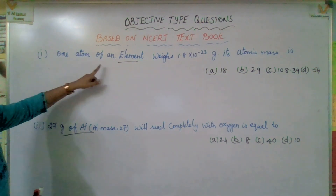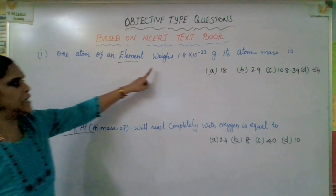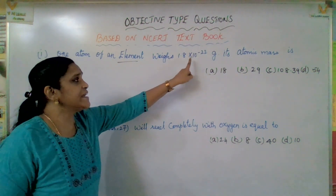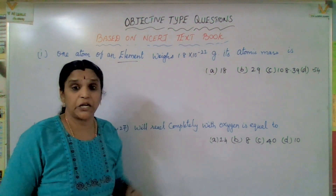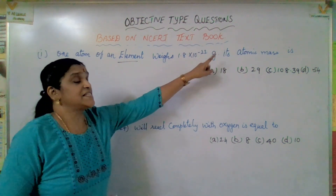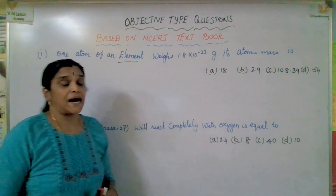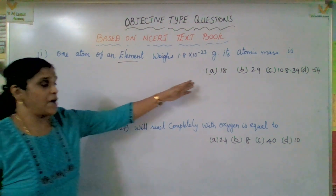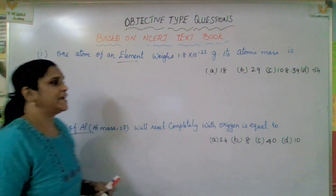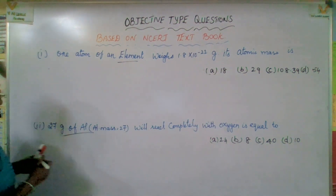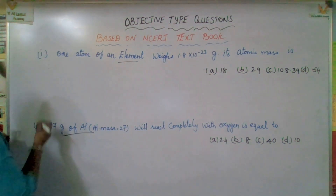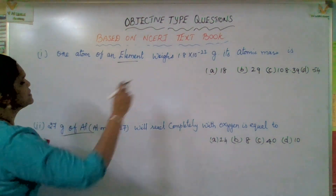One atom of an element weighs 1.8 into 10 to the power of minus 22 gram. Its atomic mass — options have been provided. Let us go for the formula. What is the formula for atomic mass?